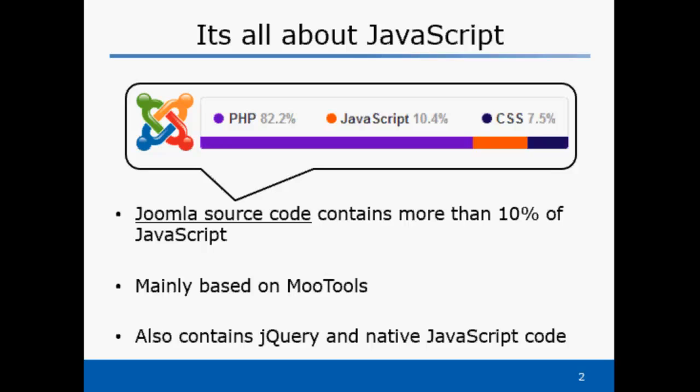If you look closely at the above image, Joomla has more than 10% of its code written using JavaScript. And before this project, the majority of this JavaScript code was written using MooTools's JavaScript library. In addition, there were very few libraries written using jQuery and native JavaScript code.